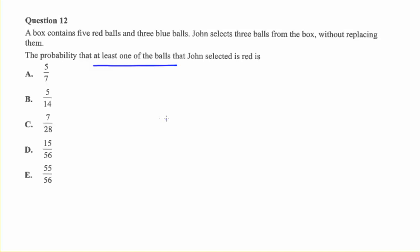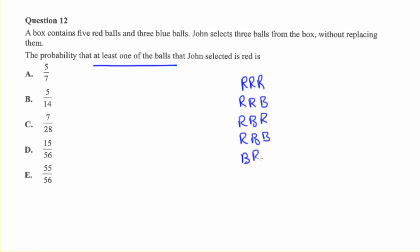At least one means it could be one, two, or three balls that are red, or any combination. If you draw the tree diagram and work it all out, you'll get eight different outcomes: red red red, red red blue, red blue red, red blue blue, blue red red, blue red blue, blue blue red, and blue blue blue. Those are all possible outcomes.